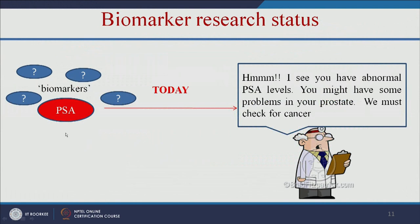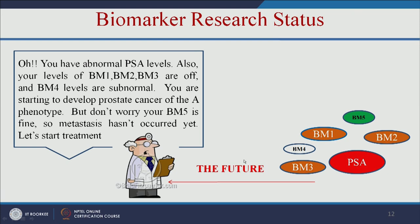This is the biomarker research status. PSA means prostate-specific antigen. If a person has a high amount of PSA, that means they have a high chance of getting prostate cancer — that is today's biomarker research status. If a person is diagnosed with a higher level of PSA, they have a high chance of prostate cancer.